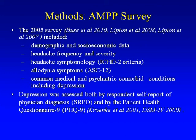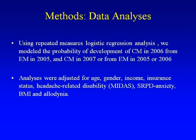In the study I was involved in, we looked at depression using the PHQ-9 questionnaire. We used logistic regression analysis to examine the development of chronic migraine in individuals who had episodic migraine in 2005 and tracked transformations in 2005–2006 and 2006–2007. We adjusted analysis for age, gender, income, insurance, headache rate, disability, self-reported anxiety, BMI, and allodynia — all known possible risk factors for chronic migraine.